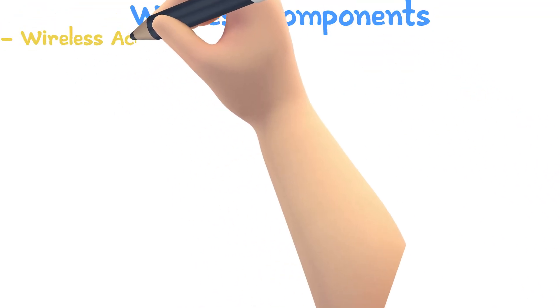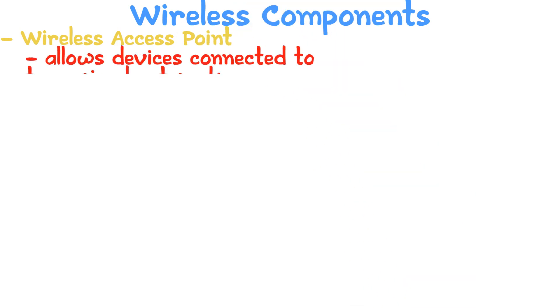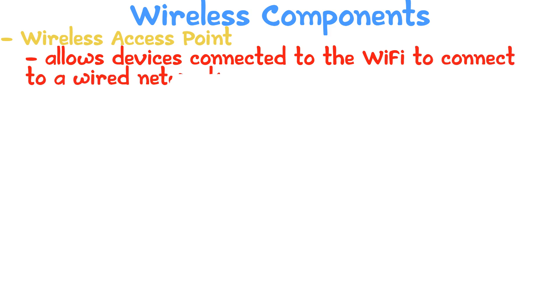Now let's take a look at the components of a wireless system. Wireless access point: this allows devices connected to the WiFi to connect to a wired network. Wireless access points can be found built into routers, but they are often available as standalone devices.